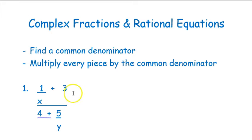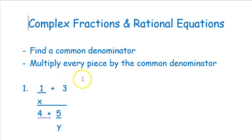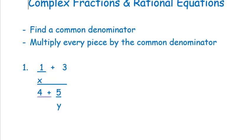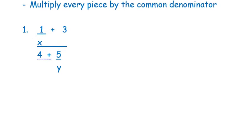This lesson is on complex fractions and rational equations. The reason I put these together is because you take similar steps with both types of problems. Those steps are: one, find a common denominator, and two, multiply every piece shown by that common denominator. We're going to start with the complex fractions.